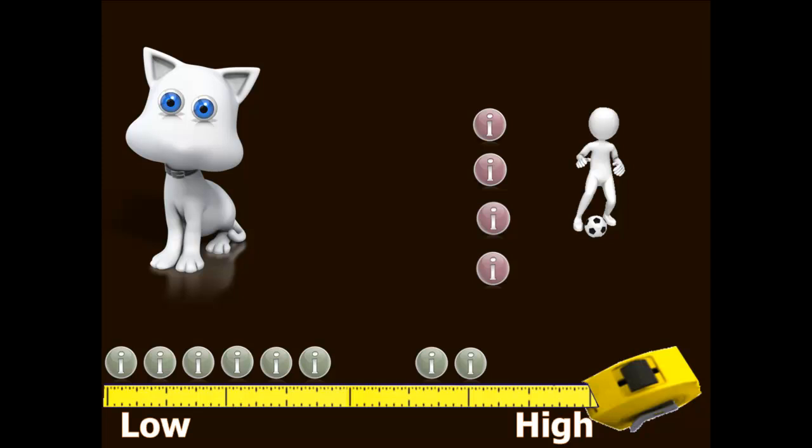This process continues as the CAT algorithm narrows in on an ever more precise estimate of the person's trait level. So a new item is administered, and then based on the person's response to that item, the CAT updates its estimate of the respondent's trait level. Then based on that updated estimate, the CAT goes and identifies the best next item to administer, the item that has the most information for that trait level.